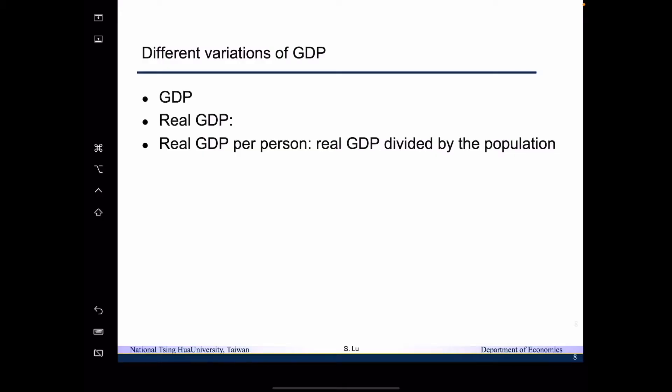Up to this point, when we talk about GDP, we say it is the sum of private sector consumption, investment, plus government expenditure, plus exports. We also say we can use GDP to measure the income of a nation. But when we want to talk about the welfare or living standard of a nation, GDP turns out to be not that perfect. We want to see how we can modify GDP so that it better reflects living standards and welfare.